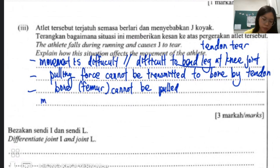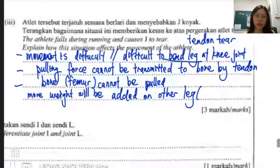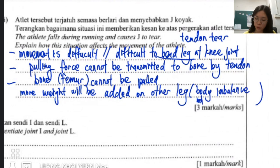An additional point: when one leg is injured, more weight will be added on the other leg, leading to body imbalance when walking. Walking requires you to bend your leg, so with a torn tendon it becomes very hard to walk and the body will be imbalanced.